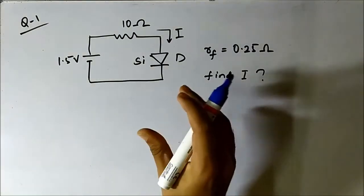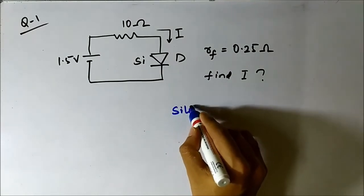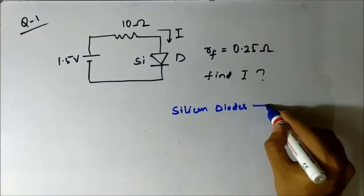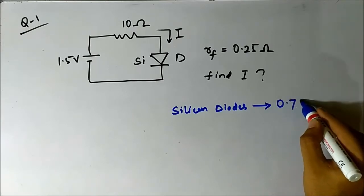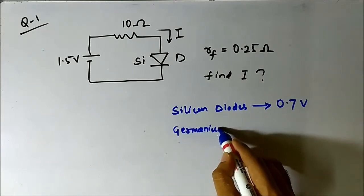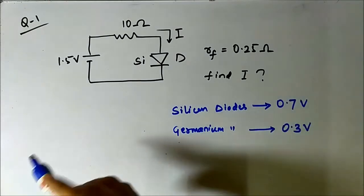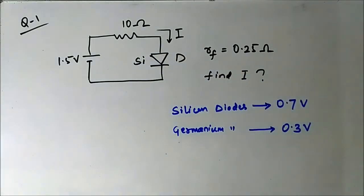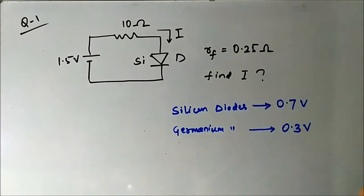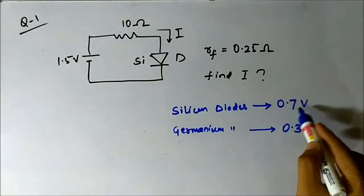When a discussion involves diodes, the first thing to remember is the built-in potential — the barrier potential. For silicon diodes this value is 0.7 volt, and for germanium diodes it is 0.3 volt. Here it has been mentioned as silicon, and it has not been stated that it is an ideal diode, so we go with the assumption that it is a normal diode with built-in potential 0.7 volt.